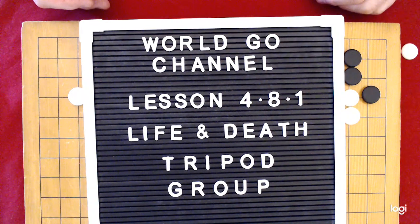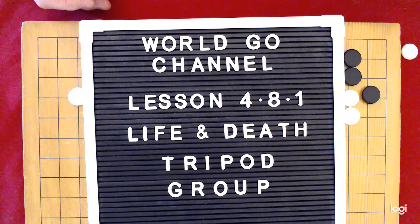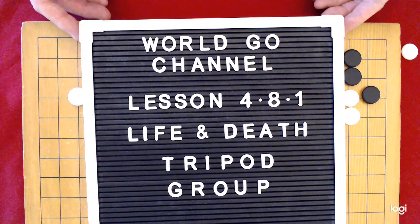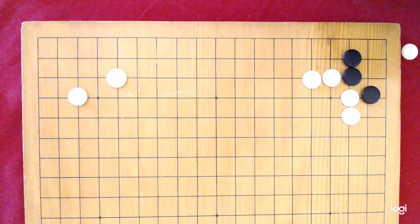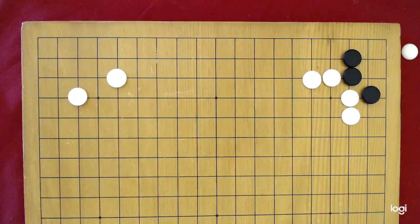Today's lesson is in the Life and Death series. It's Lesson 4.8.1. We're going to be studying the tripod group. It occurs in the corner. Tri meaning three, pod meaning feet. So it's got three feet.